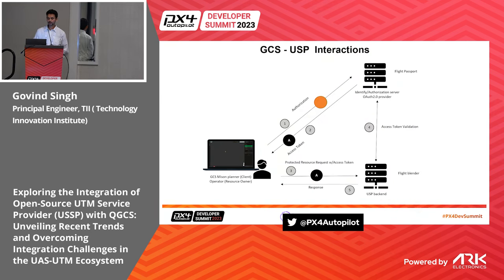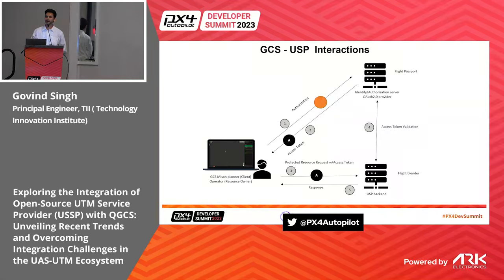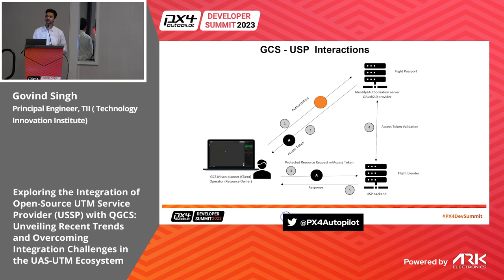On the USSP side, the UTM service provider has a back-end component implementing all the UTM services, a front-end component for visualization of the airspace, and an authorization server implementing OpenID Connect for authentication and authorization. On the GCS side, you first authenticate to get an authorization token, and only with a valid access token can you access the back-end APIs for flight planning and network remote ID. Access is tied to the token validity and scope.